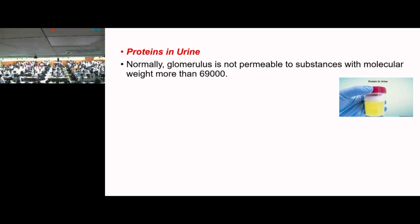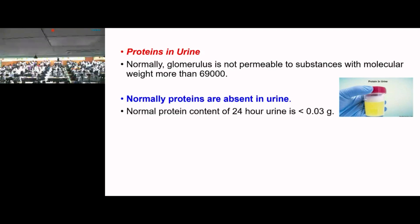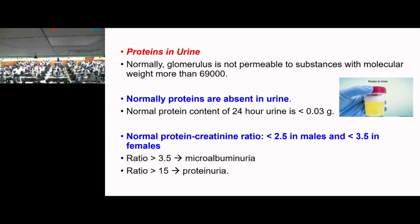Moving on to proteins in urine: normally proteins are not filtered by the glomerulus, which is not permeable to substances above 69,000 daltons. Normal protein content should be less than 0.03 grams. The protein-creatinine ratio should be less than 2.5 in males and less than 3.5 in females. More than 3.5 is called microalbuminuria, and more than 15 is called proteinuria.